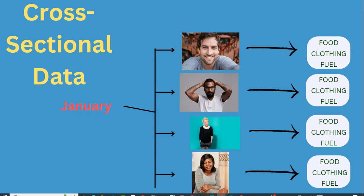Now, cross-sectional data will look like this. We will have only one period — like January — and two or more economic units: one, two, three, and four. These are indicators, or variables, for which we want to download data — such as food, clothing, and fuel. It can be one or more than one variable.